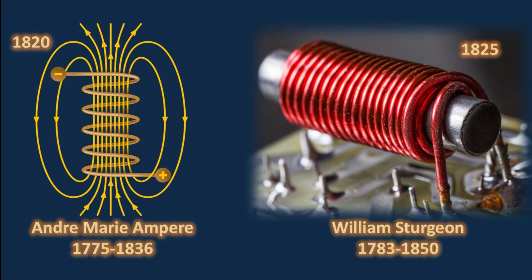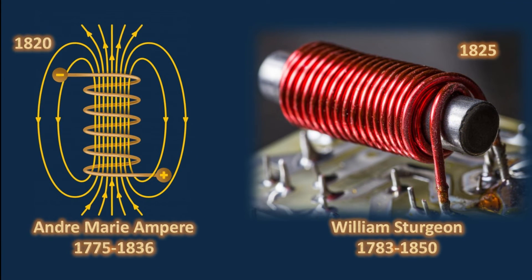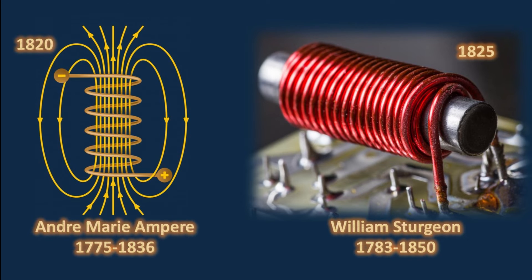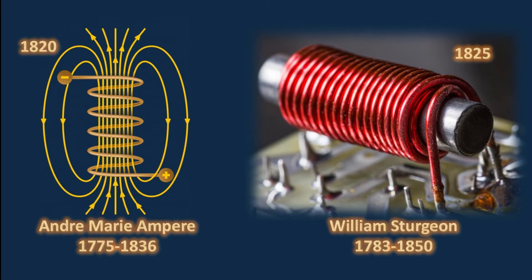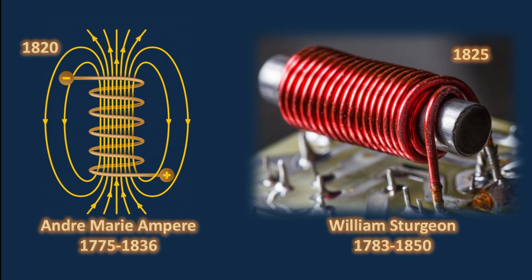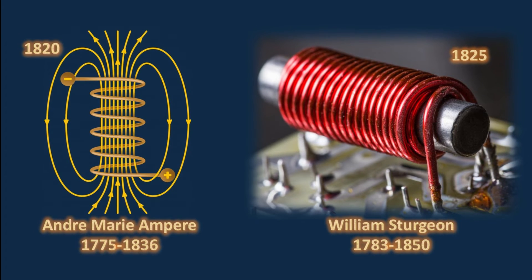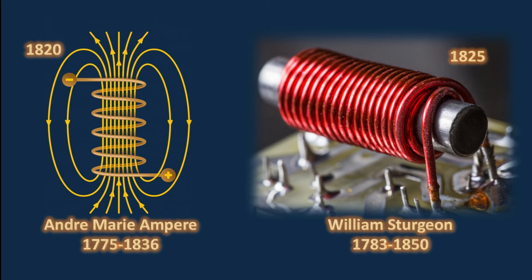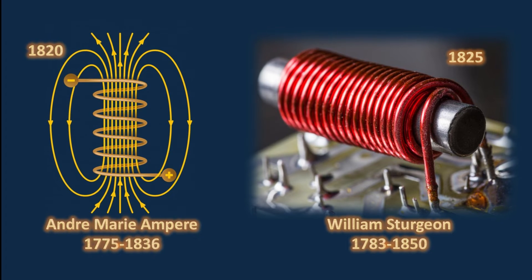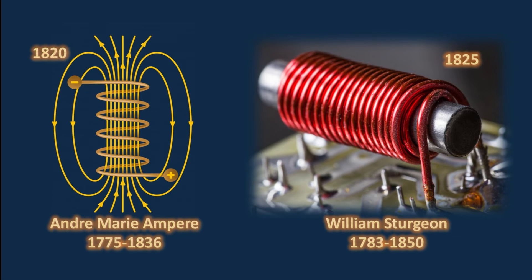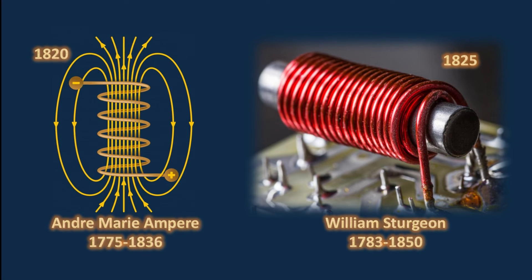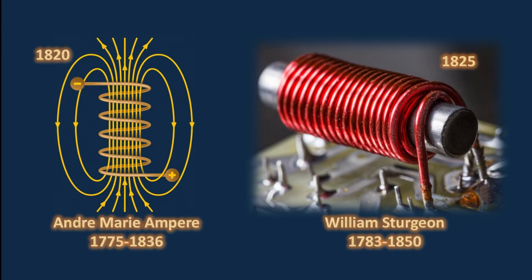The generation of magnetism from electricity was becoming common knowledge. A current carrying coil when suspended would align itself north south. An ordinary piece of iron would transform into a permanent magnet when placed briefly in the coil. A powerful magnet can be constructed by placing a ferromagnetic material such as iron into the solenoid. Such a device is known as an electromagnet.